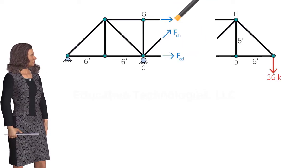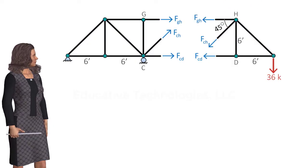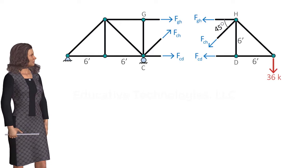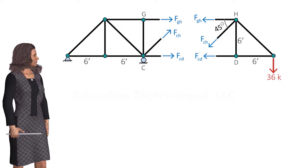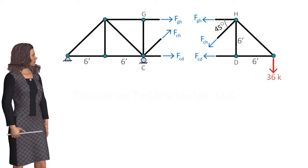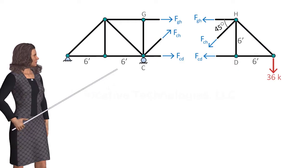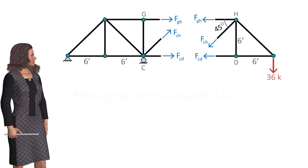In this case, since we have cut through three members, we've exposed three member forces. We know that when a truss is in the state of equilibrium, the equilibrium equations are satisfied for the entire structure and for any isolated part of it. So we can argue that these two parts must also be in equilibrium — the three equilibrium equations must be satisfied for each part.